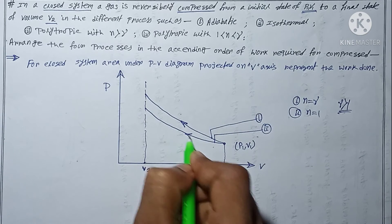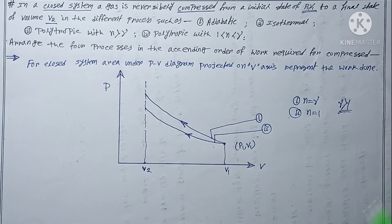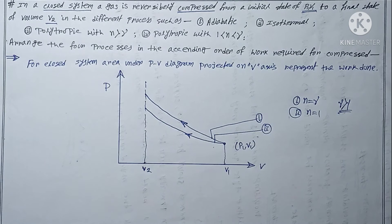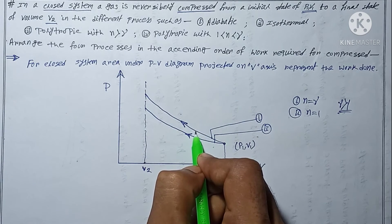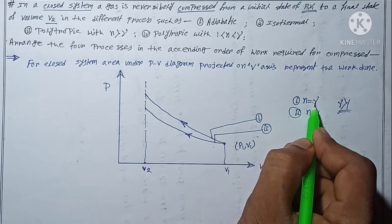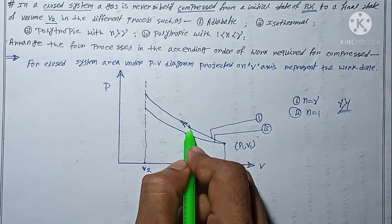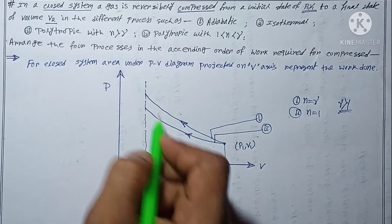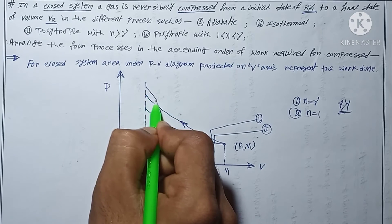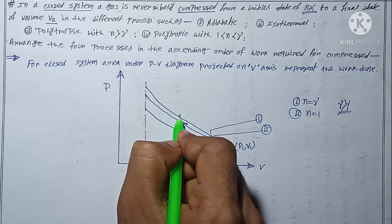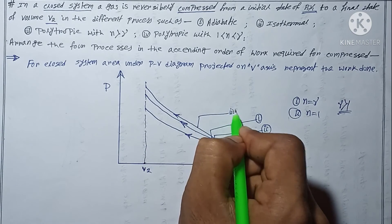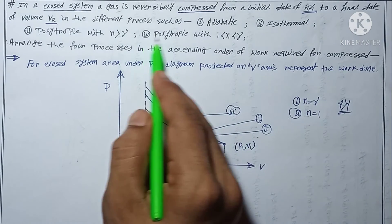The next process is polytropic with n greater than gamma. Since process 1 has n equal to gamma, a process with n greater than gamma means going clockwise — that is, above process 1. So this curve lies above the adiabatic curve, and it represents process number three.